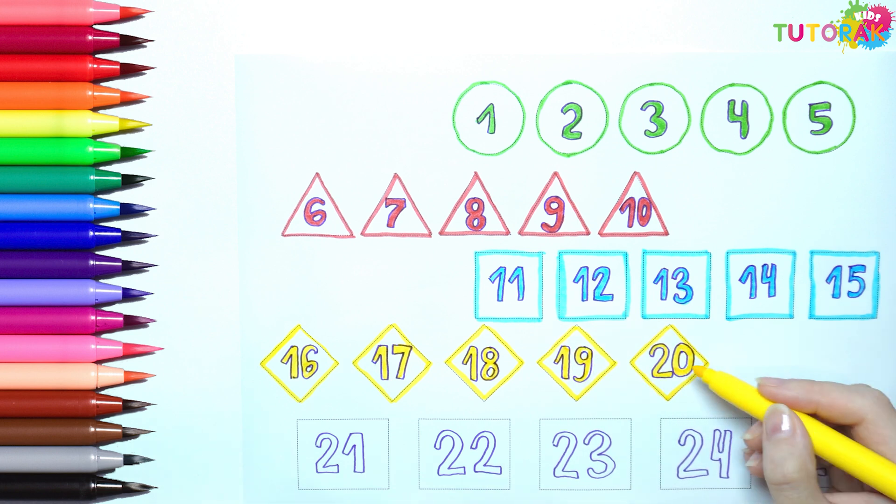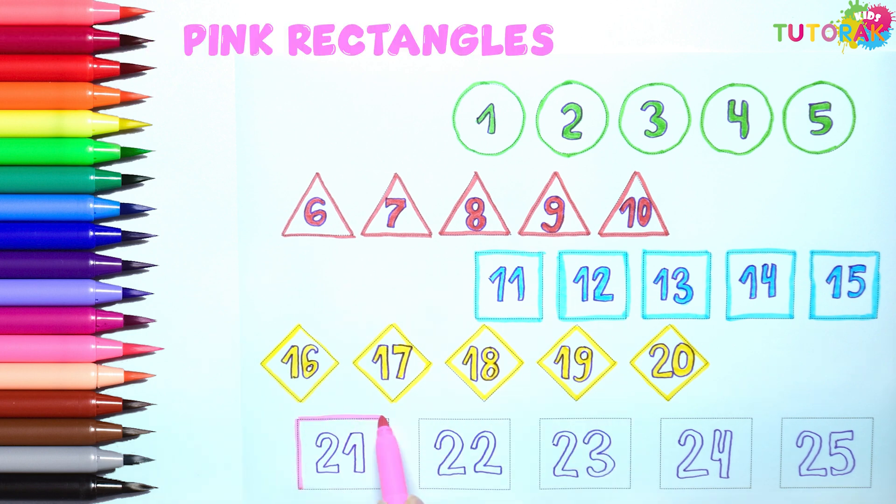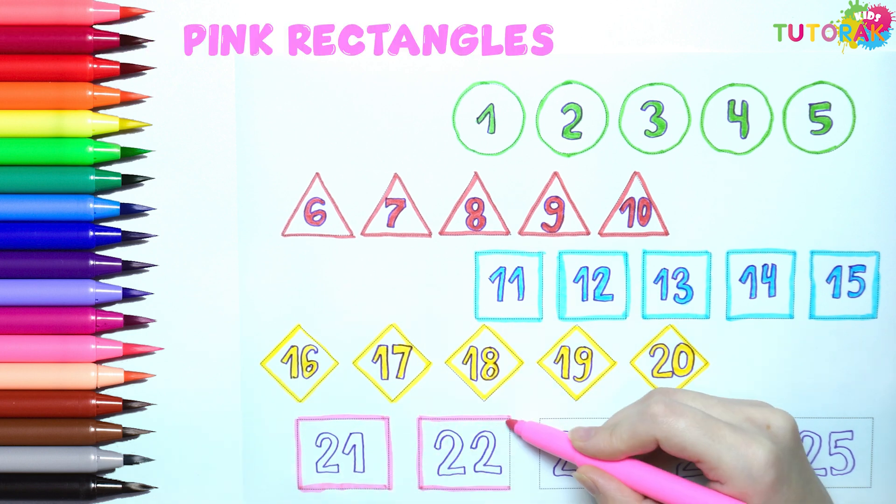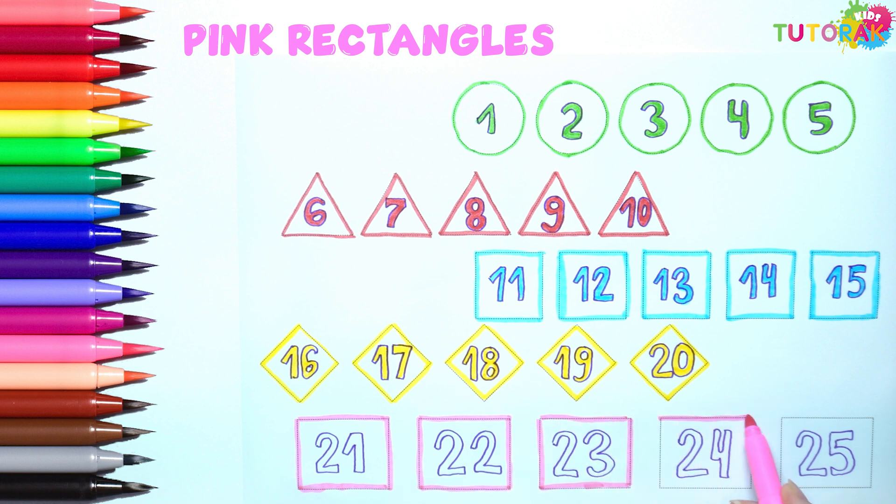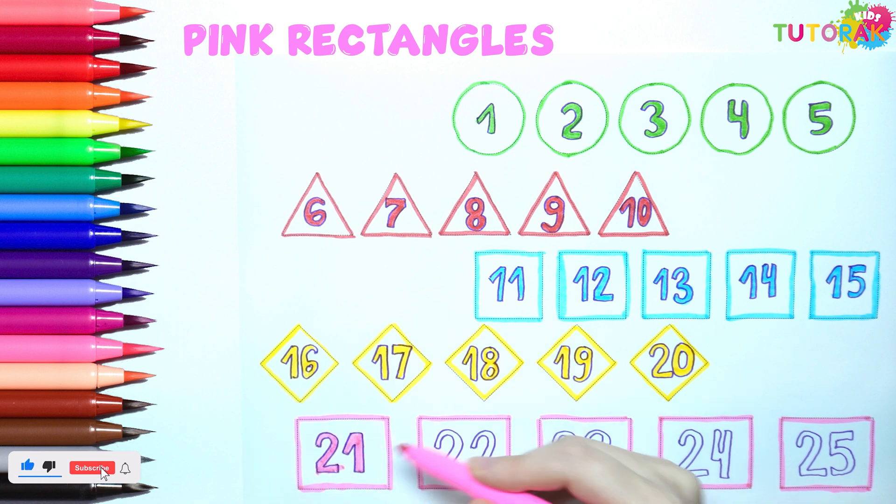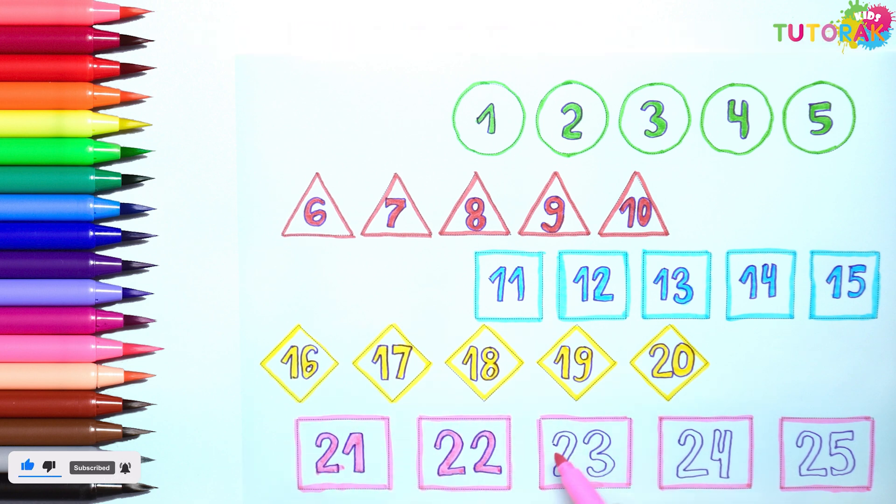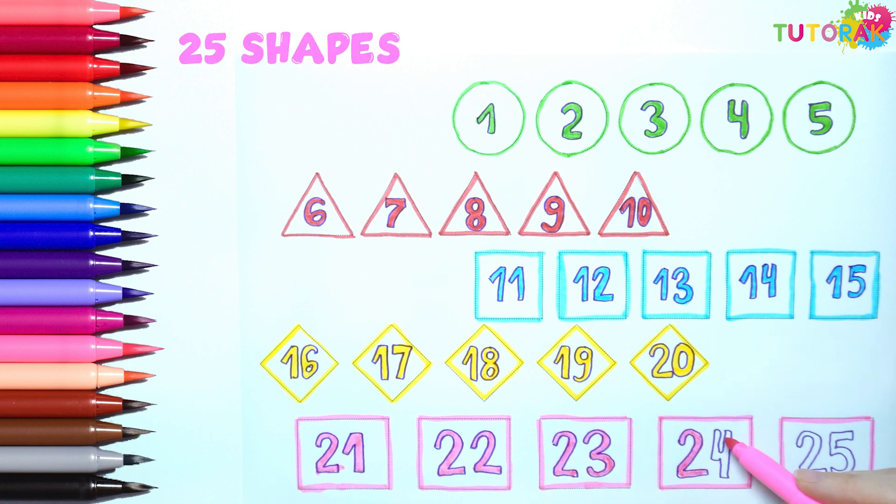And together we have 1, 2, 3, 4, 5. The last shape is a rectangle. We have 1, 2, 3, 4, 5. We have 5 pink rectangles. And together that makes 25 shapes.